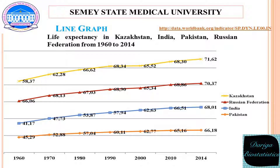Example of graphical presentation of data. The line graph compares life expectancy between four countries from 1960 to 2014. As can be seen from the graph, all countries have upward trends. According to the given information, the highest life expectancy is in Kazakhstan, whereas the lowest is in Pakistan.